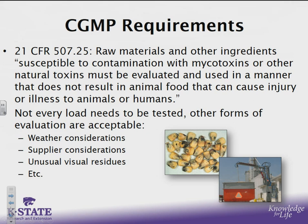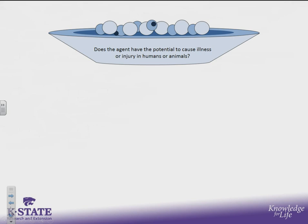I can also consider specific supplier considerations, the role of any unusual visual residues, or a variety of other things, and all of those can be considered as part of this evaluation metric. So the second part, outside of current good manufacturing practice, is to have and understand the role of mycotoxins within a food safety plan and understand if they need a preventive control. To make the best decision about that, we first have to understand what some of this terminology means as it relates to hazards and FSMA language. When we think about mycotoxins, the first question we ask ourselves during hazard identification and evaluation is: does the agent — in this case mycotoxin — have the potential to cause illness or injury in humans or animals?